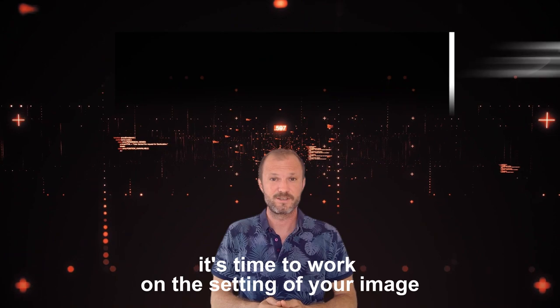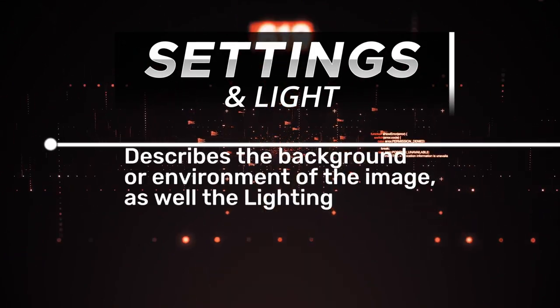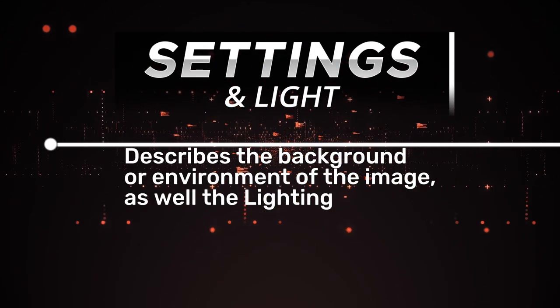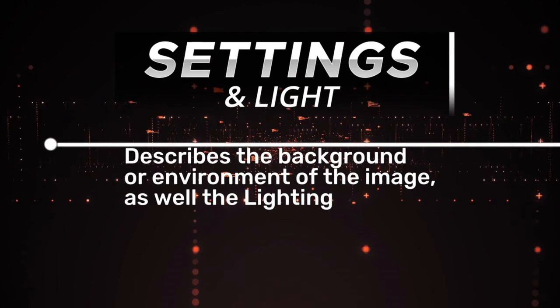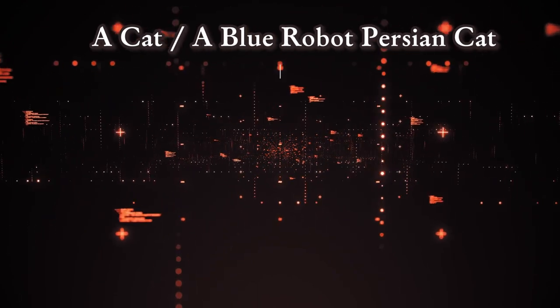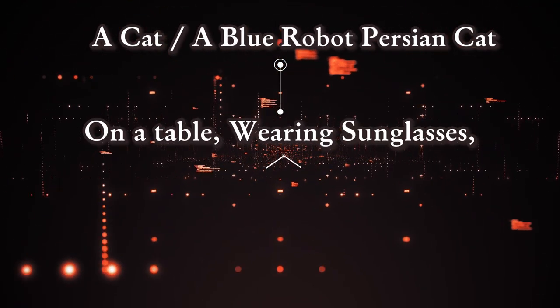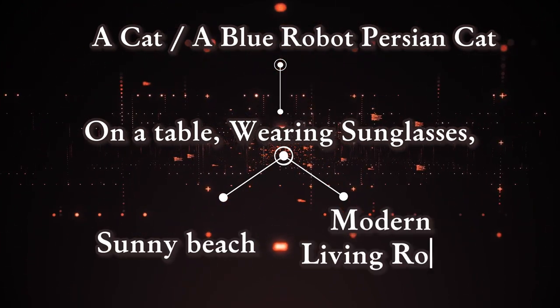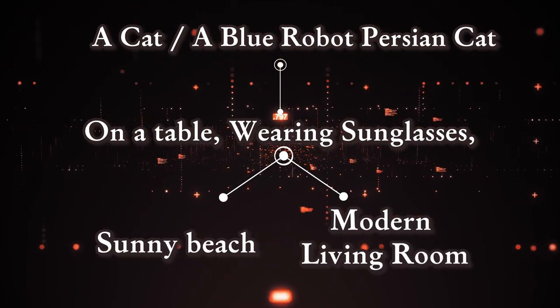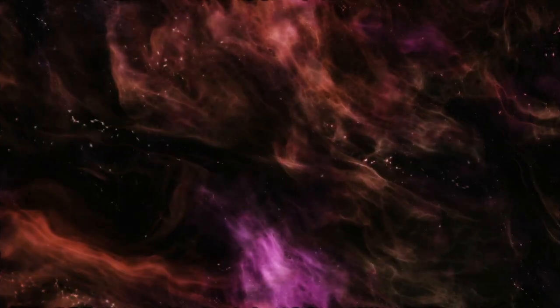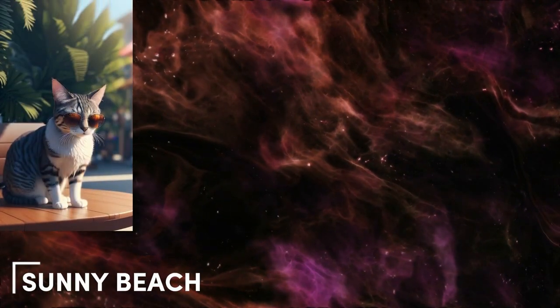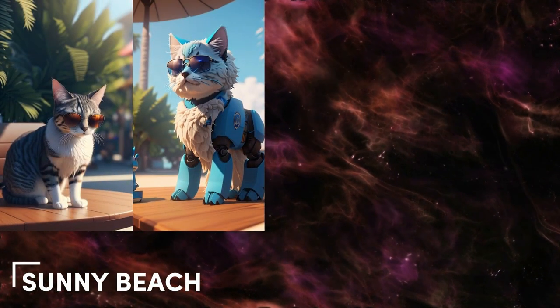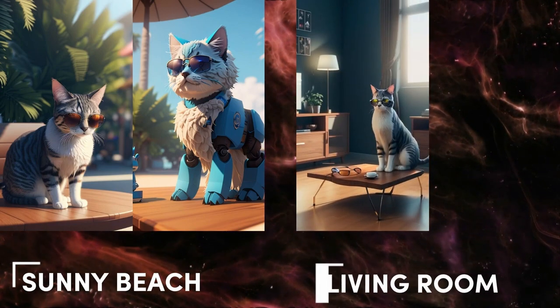Once you are satisfied with your subject, it's time to work on the setting of your image. You can start describing the background and environment of the image, as well as the lighting effect you want to use. Let's get back to our prompt — we have a subject, some detail, and we add some background information, like a sunny beach or a modern living room. Now our cats are either enjoying a sunny afternoon at the beach, or chilling in a comfy living room.